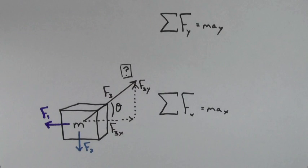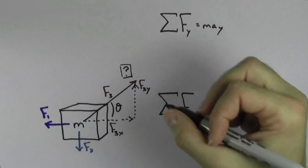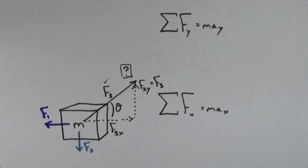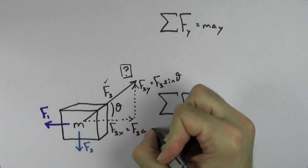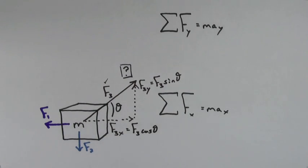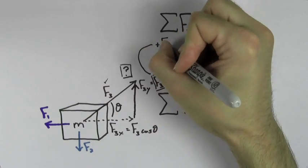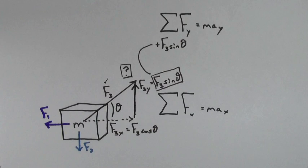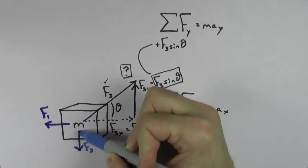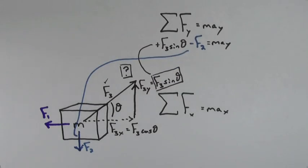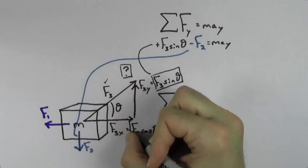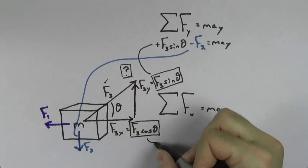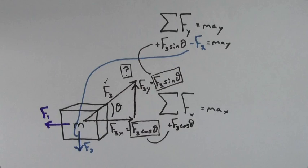The vertical component of this force F3 is going to equal the total size of the force F3 times sine of the angle. The horizontal component of F3 is going to equal the total size of F3 times cosine of the angle. Now we can include this vertical component of F3 into the vertical forces equation, along with any other vertical forces in the problem. Similarly, now we can include the horizontal component of F3 into the horizontal forces equation, along with any other horizontal forces in the problem.